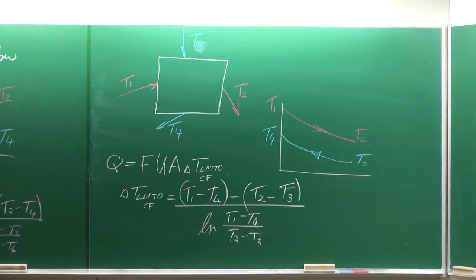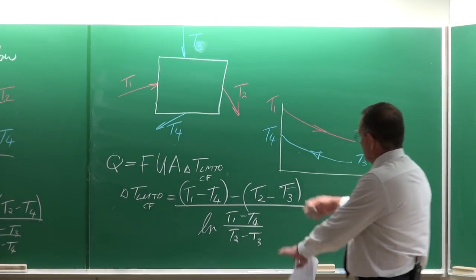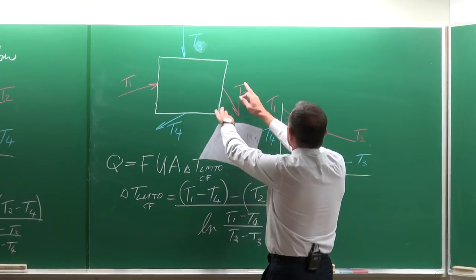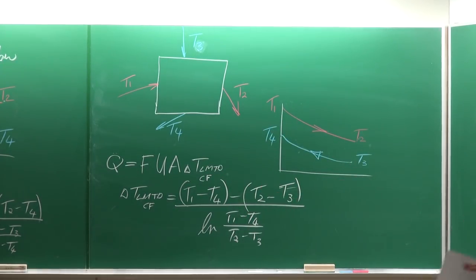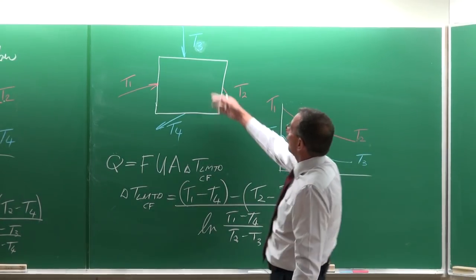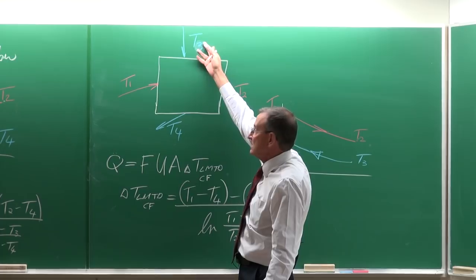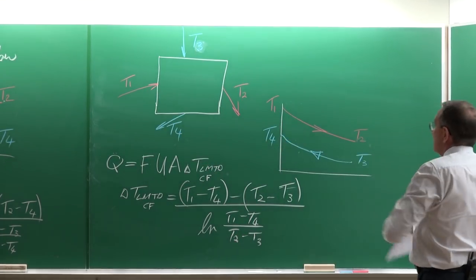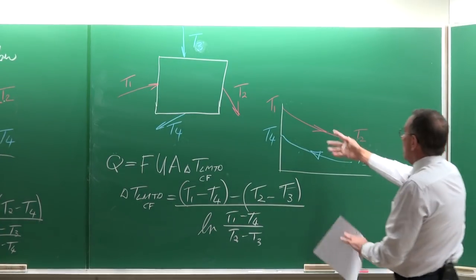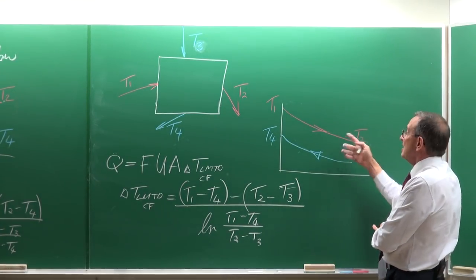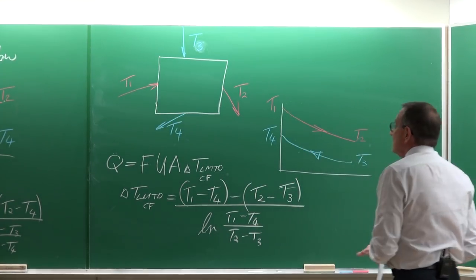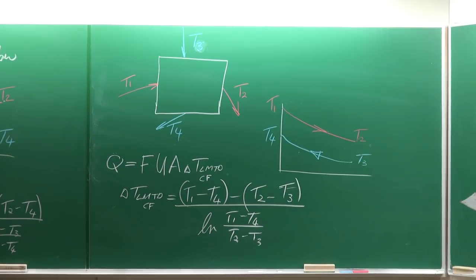This equation now looks exactly like the previous one, but it is just because of the choice of inlet conditions. You could start with the cold stream and use that as T1 and T2. Just use the discipline: once you've drawn a sketch and you look at the two streams to find the highest temperature, it is very easy to correctly write down the LMTD.